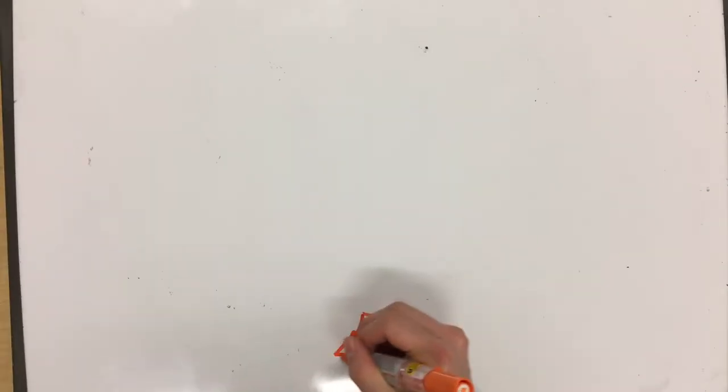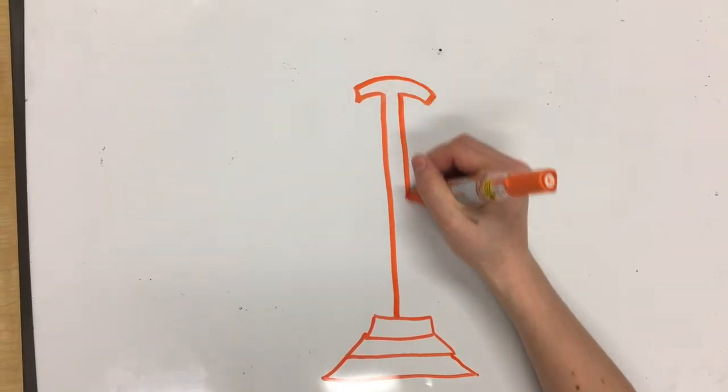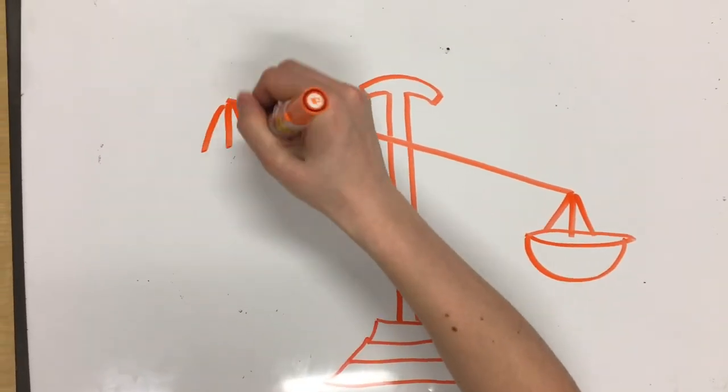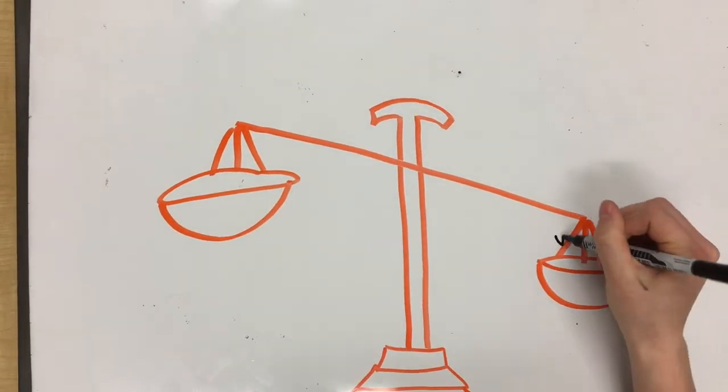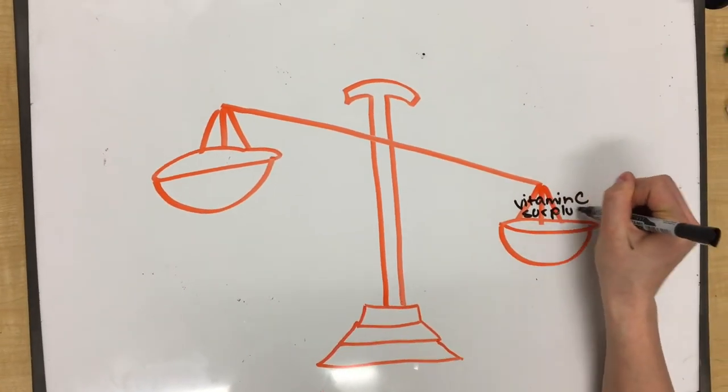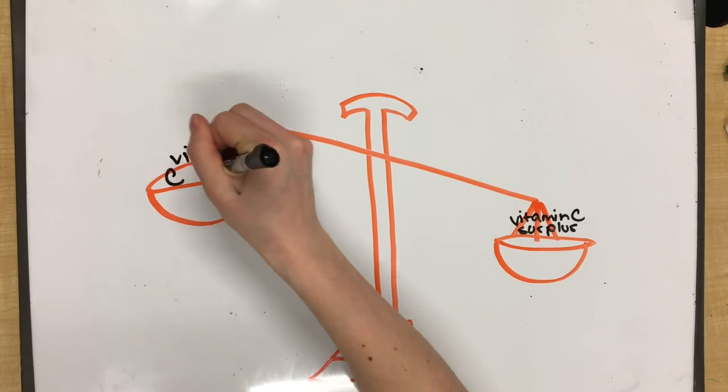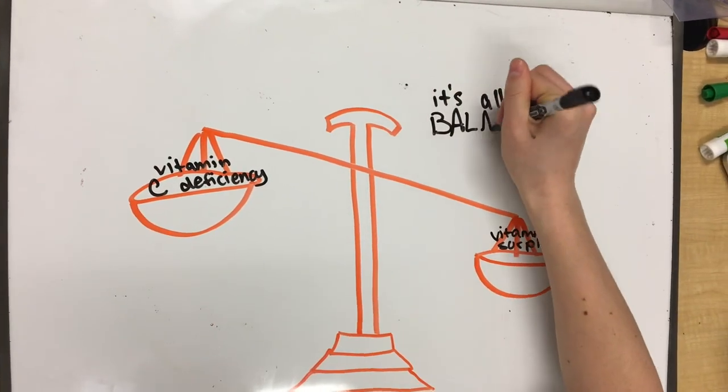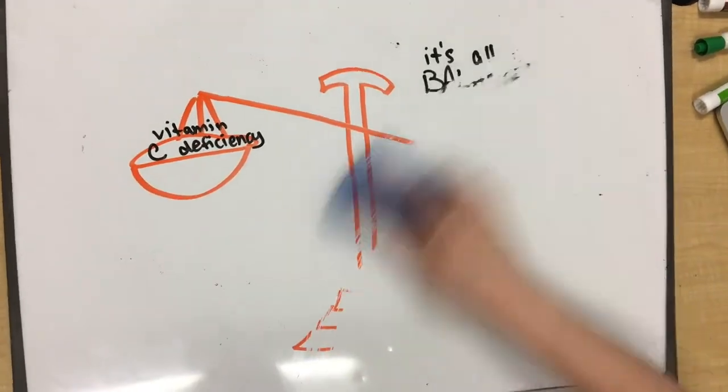However, if you ingest past the upper daily limit of 2000 milligrams a day of vitamin C, you can also begin to suffer from the effects of having a surplus of vitamin C in the body. The symptoms aren't as bad as scurvy, but nausea, abdominal cramps, and the possibility of kidney stone formation aren't fun either. So it really is a balance when it comes to vitamin C intake.